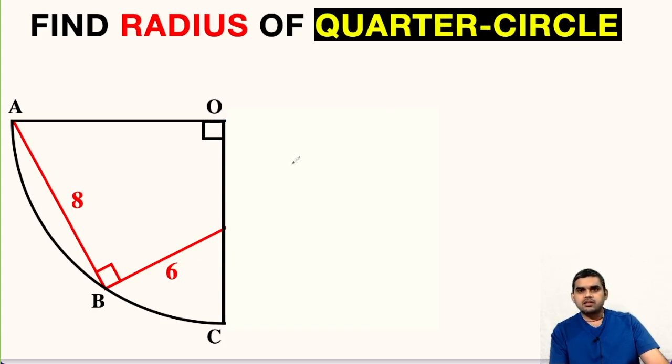Welcome to my YouTube channel once again. Today I am back with another interesting question. As we can see in the figure, a quarter circle is given whose center is at point O. Inside it we have two line segments, one is 8 units in measure and the other one is 6 units in measure. We are asked to find the radius of this quarter circle.